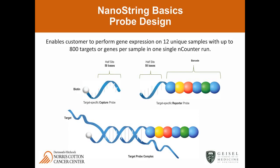First, let's go through the NanoString basics of what their standard assays are. Usually, they enable a customer to do gene expression on 12 unique samples and look at up to 800 targets or genes within a single run. The real trick to the NanoString are the probes that they use. There is a capture probe consisting of 50 bases that match 50 bases of your target sequence, and on the end of that capture probe is a biotin molecule. Then there is the reporter probe, which also has 50 bases matching a different 50 bases of your target. On the end of the reporter probe is a barcode consisting of six different fluorescent molecules, and that barcode is specific to each individual target.